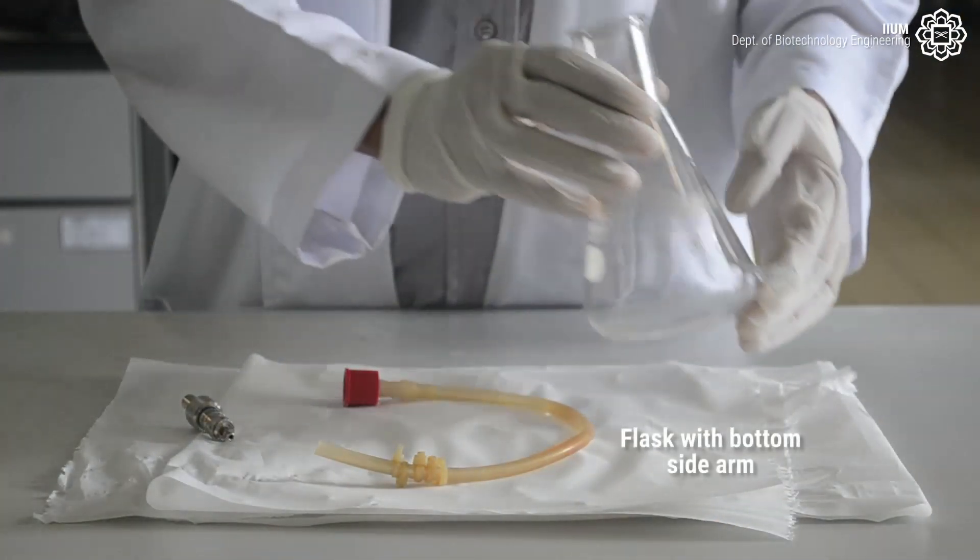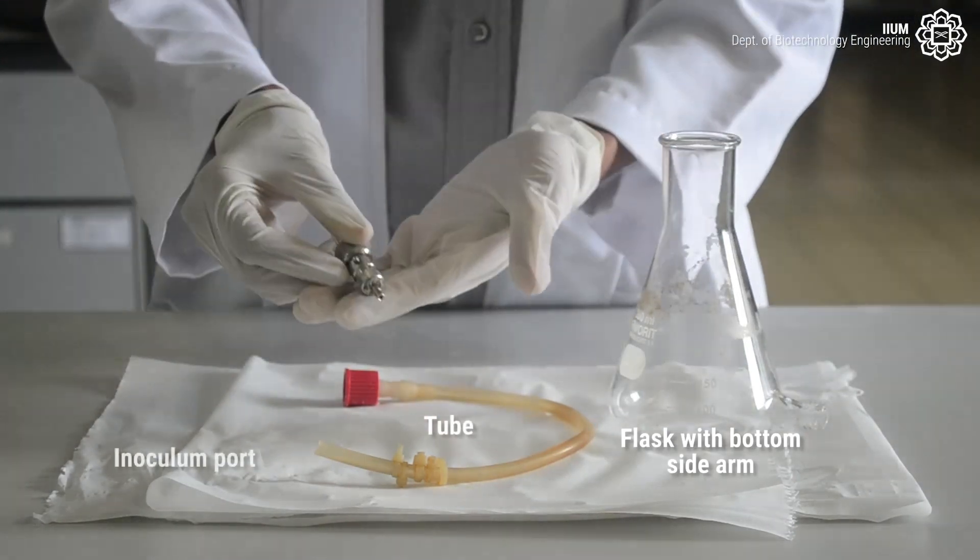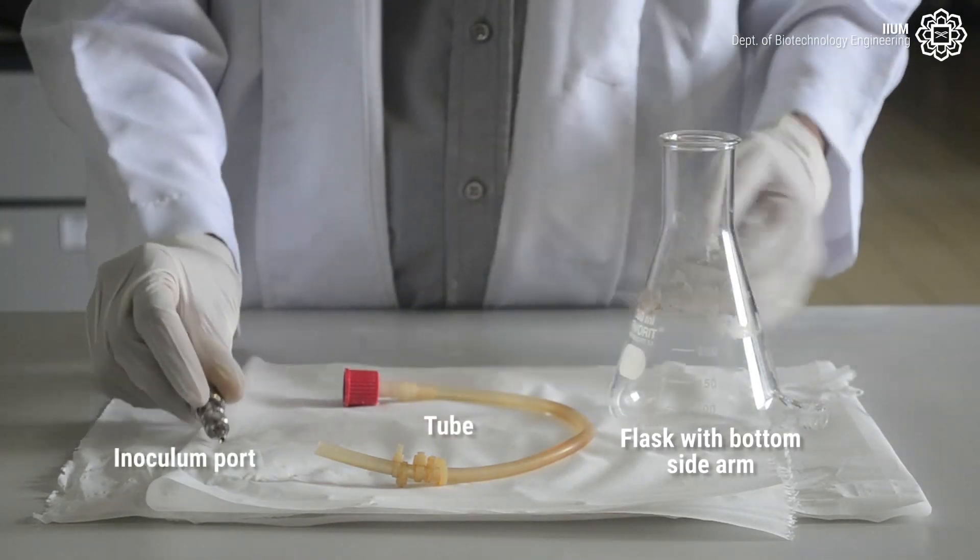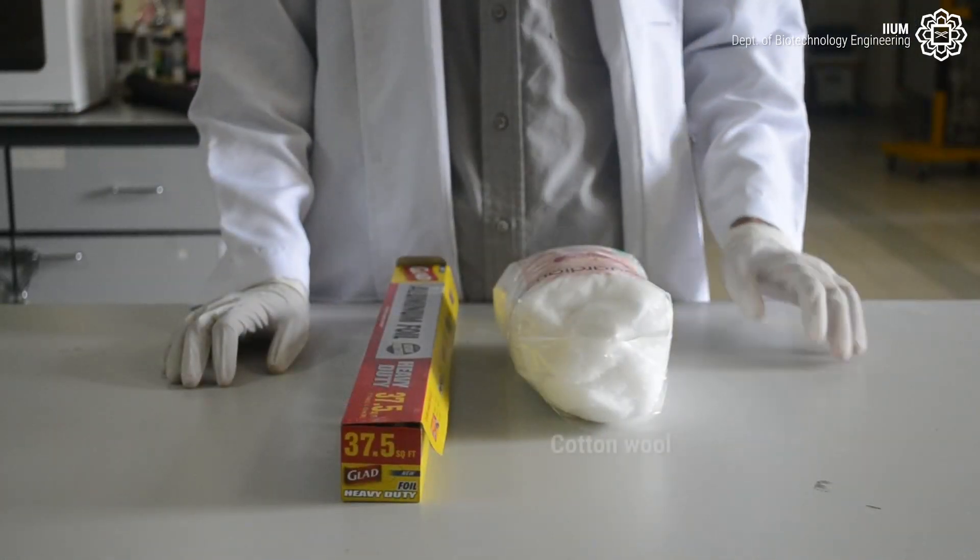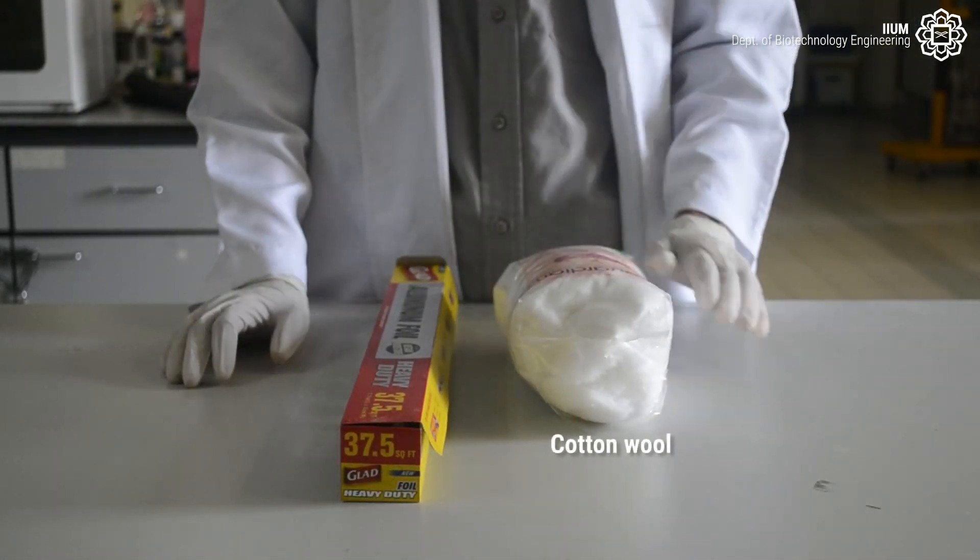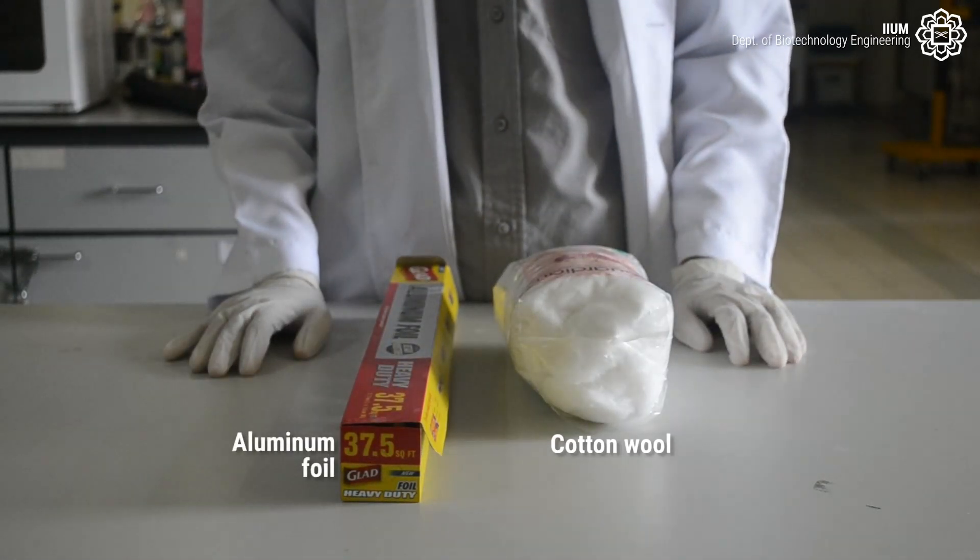Then we need a flask with bottom sidearm, tube, and inoculum port. After that, we need cotton wool and aluminum foil for covering some parts of the photobioreactor and the flask.